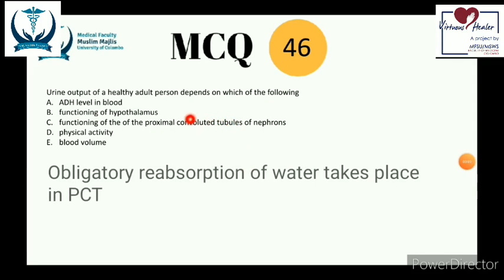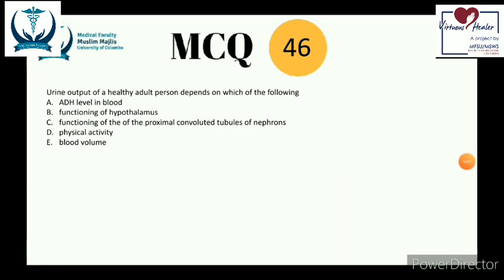The PCT is important because 80% of water is obligatorily reabsorbed there regardless of body water content. During exercise and heat stress, glomerular filtration rate and renal blood flow are both markedly reduced — blood is redirected to muscles for oxygen supply — resulting in decreased urine output. Water is also lost as sweat during exercise, further reducing urine output.